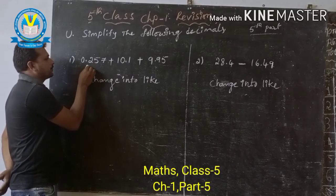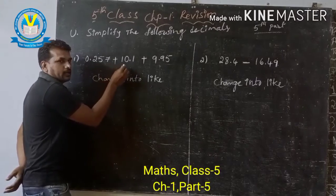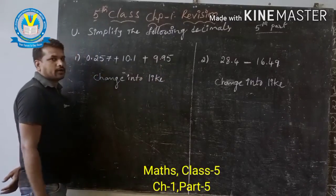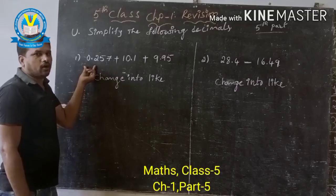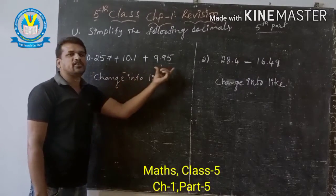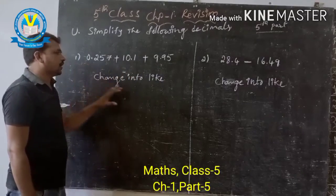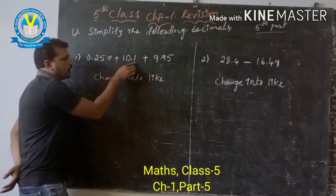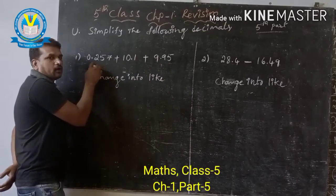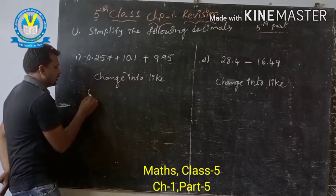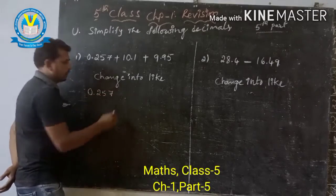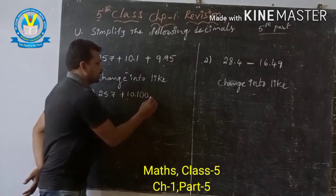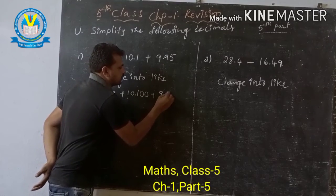Here, 0.257 plus 10.1 plus 9.95. The point after places are different, so first of all we change like this one. Point after three places, point after only one place, point after two places. So we make all equal — point after three places: 0.257 plus 10.100 plus 9.950.